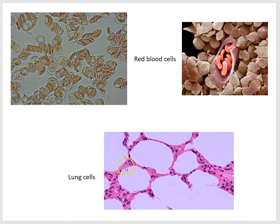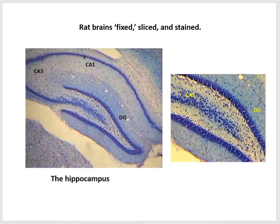Here we see lung cells under the light microscope. The stained blue things are the nuclei of individual cells. The lung tissue has a lot of empty space in it, and we'll study why that is in future lessons. We have also seen hippocampal cells — these are brain cells. This is the hippocampus on the left, and more magnified, we can see the individual purple structures are neurons.